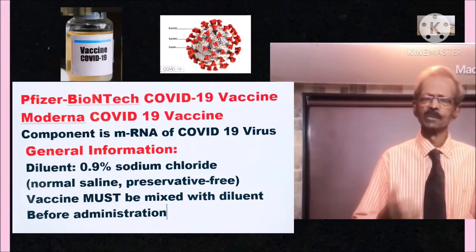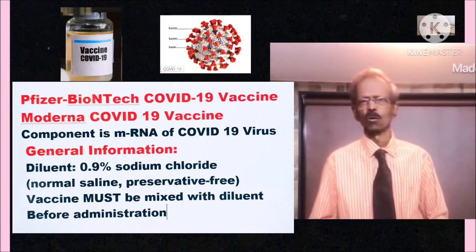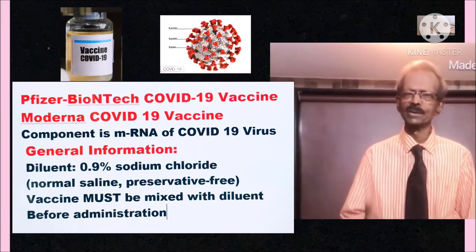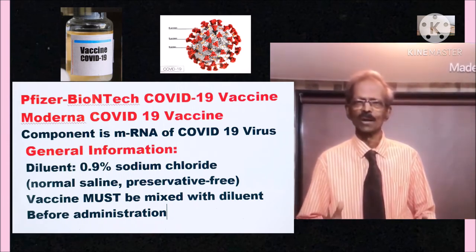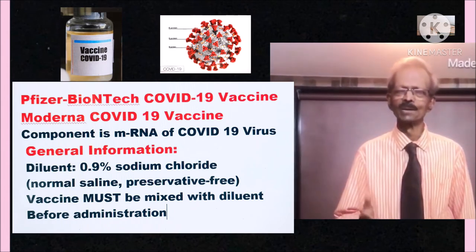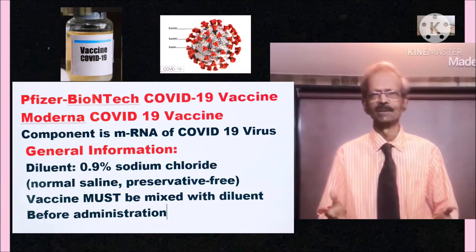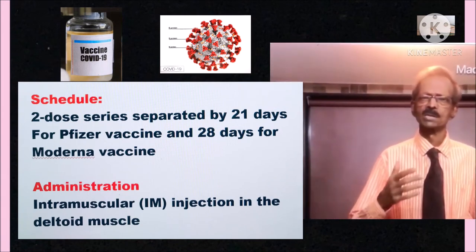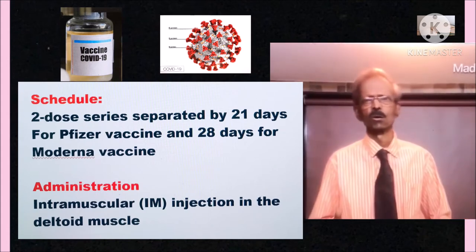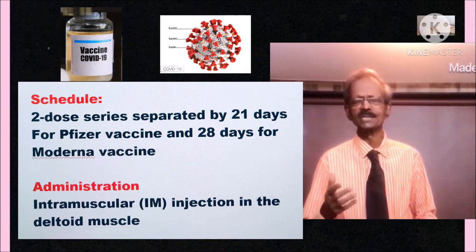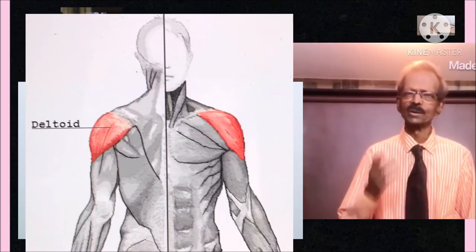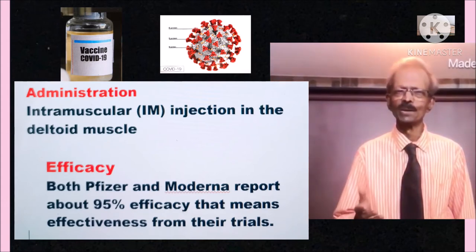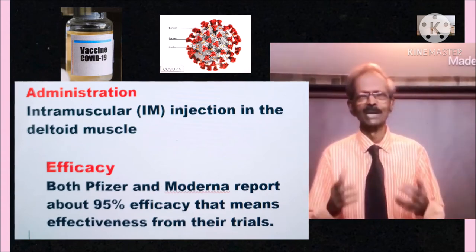The Pfizer and Moderna COVID-19 vaccine component is messenger RNA (mRNA) of the COVID-19 virus. The diluent is 0.9% sodium chloride, that is normal saline, and the vaccine must be mixed with the diluent before administration. The dosing is a two-dose series separated by 21 days for Pfizer and 28 days for Moderna. Administration is by intramuscular injection in the deltoid muscle. Both Pfizer and Moderna report above 95% efficacy from their trials.